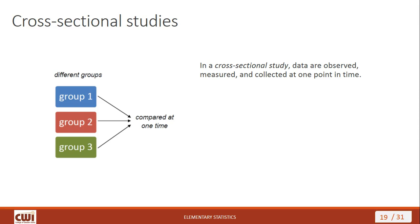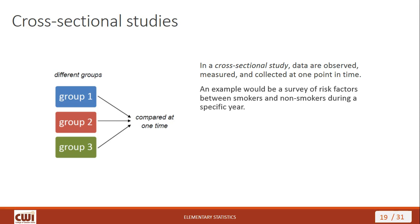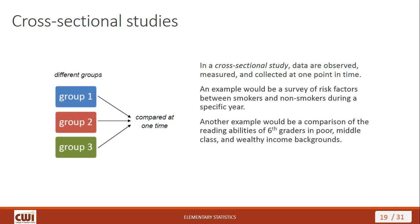In a cross-sectional study, you're observing data, making measurements, collecting things at one point in time. You've got different groups you're comparing at one point in time. An example would be a survey of risk factors between smokers and non-smokers during a specific year — two different groups at a specific point in time. Another example: comparing the reading abilities of sixth graders from poor, middle-class, and multi-income backgrounds, looking at what their abilities were for these different groups at the same time.